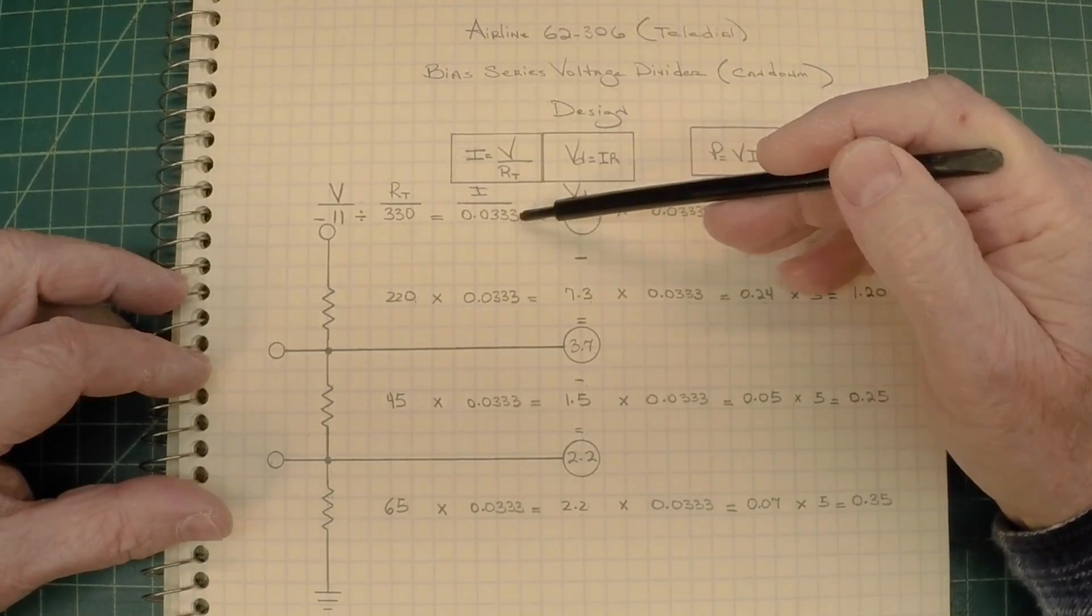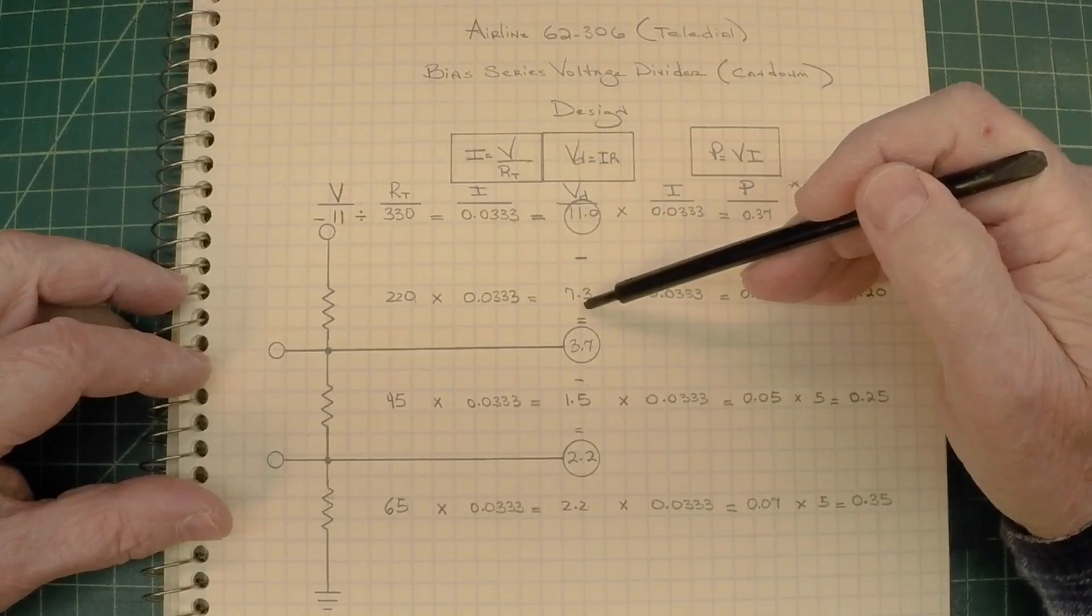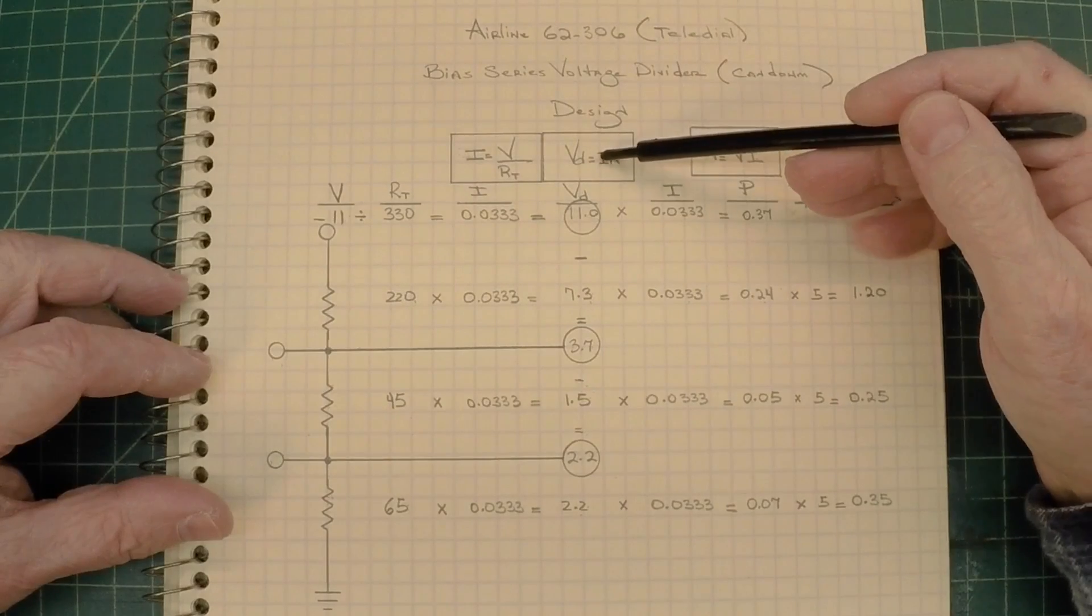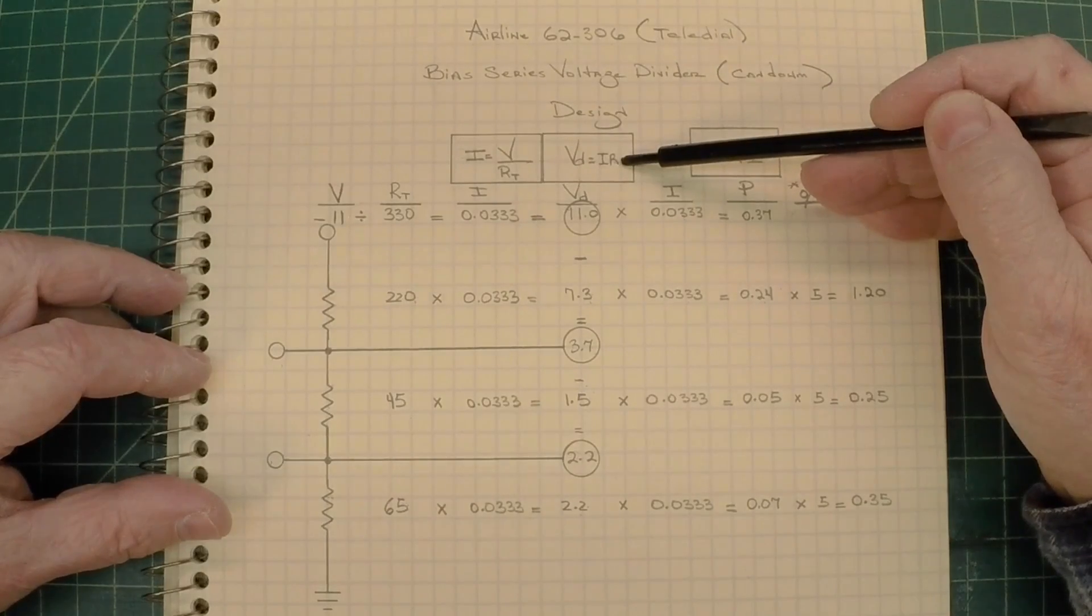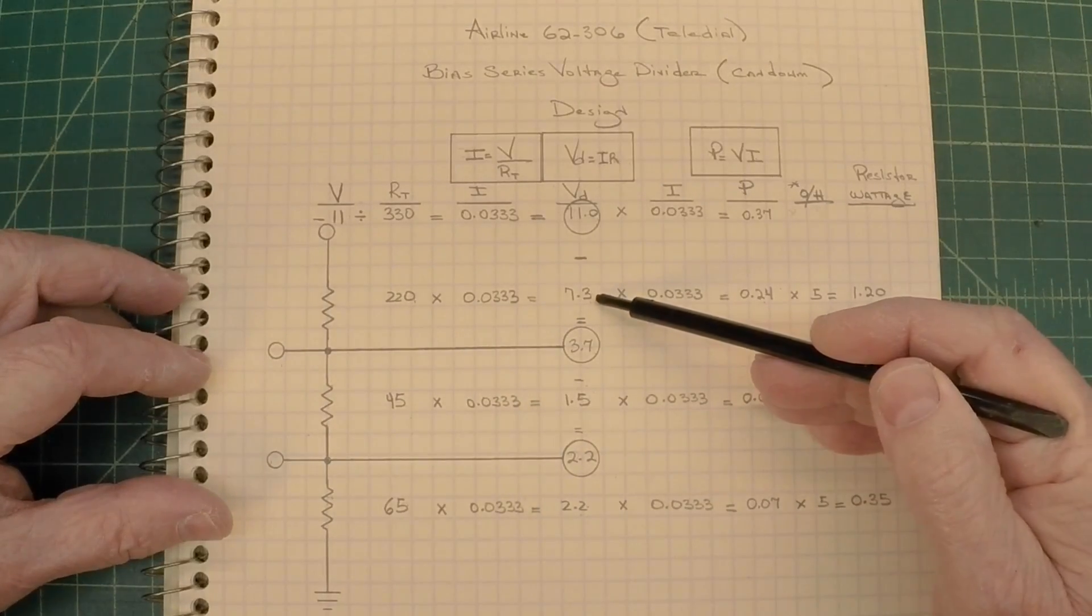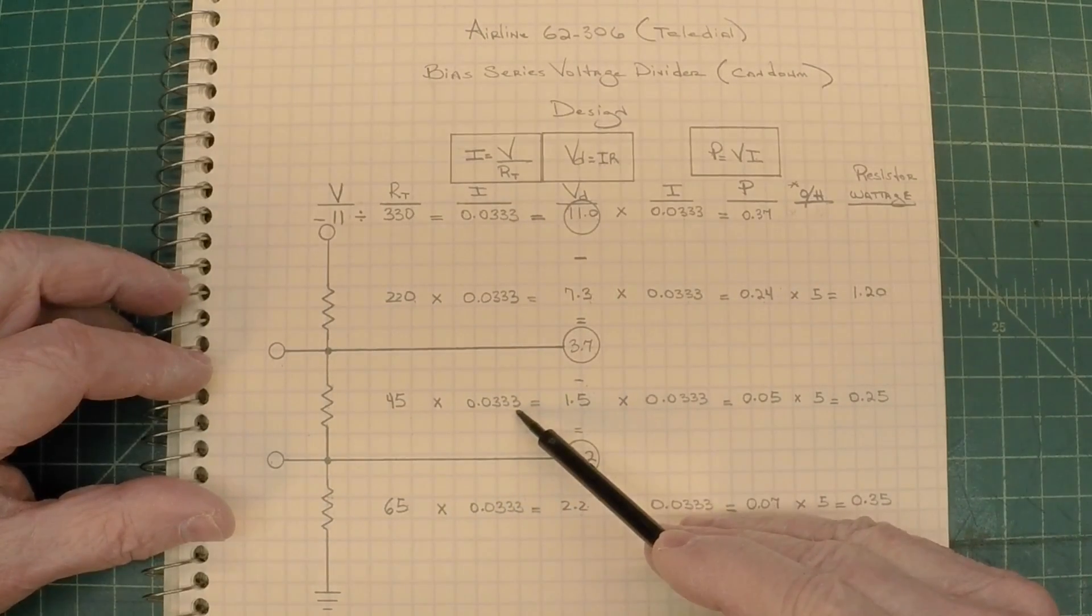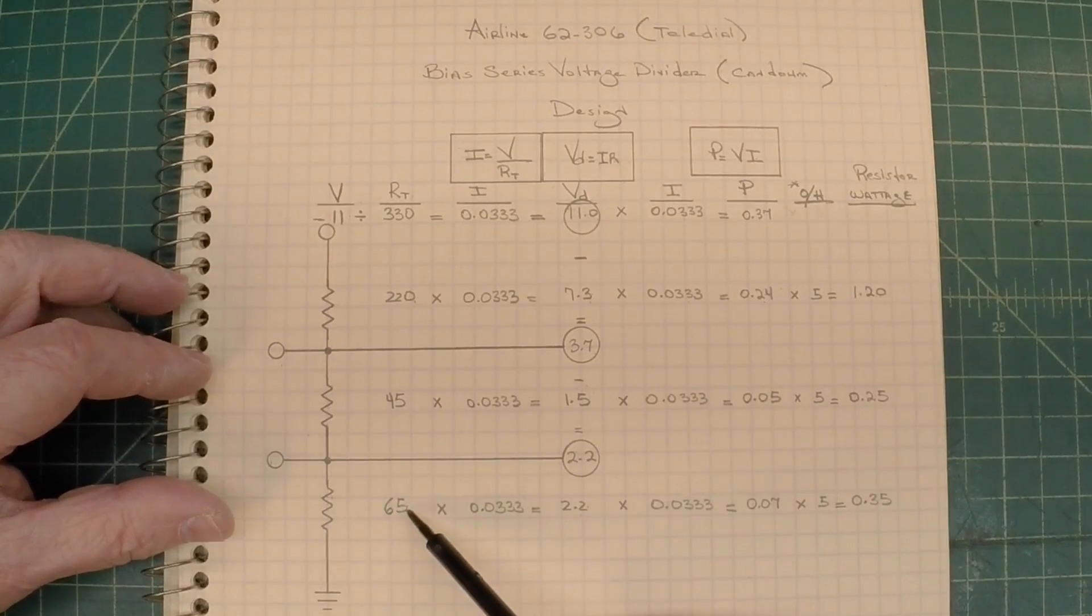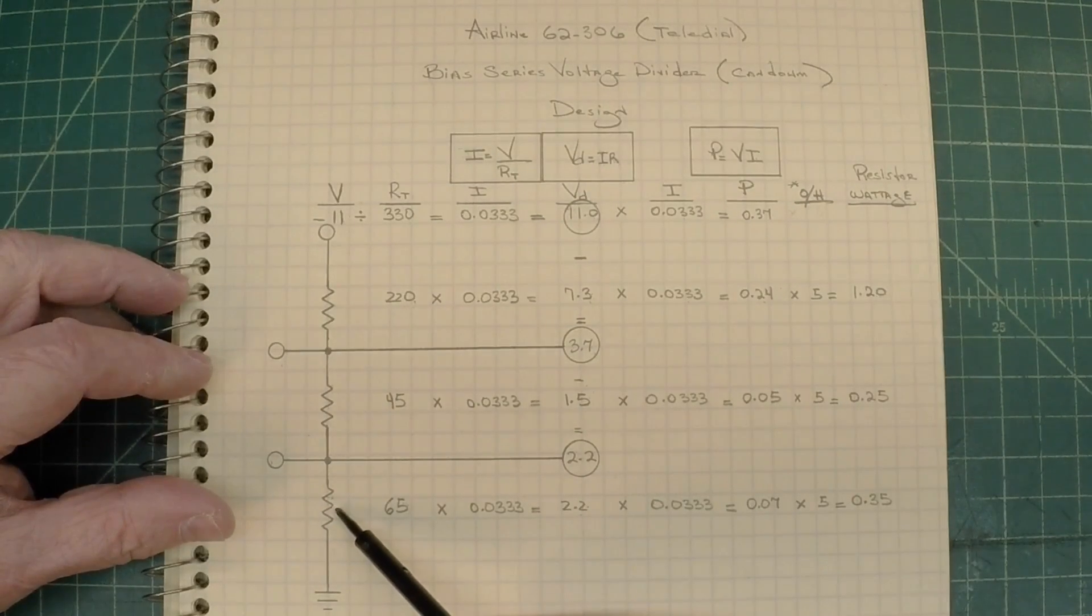Since we have that data and we have the resistance value, we want to look at the voltage drop for each section here, the 220, 45, and 65. To do that, we'll apply Ohm's law. The voltage drop is nothing more than the current itself, I times the resistance. So you can see that's what I've done here. 220 times the current gives me a voltage drop of 7.3 volts across this section. 45 times the current here gives me a voltage drop of 1.5 for this section. 65 times the current here, 2.2 volt drop across this section of the resistor itself.